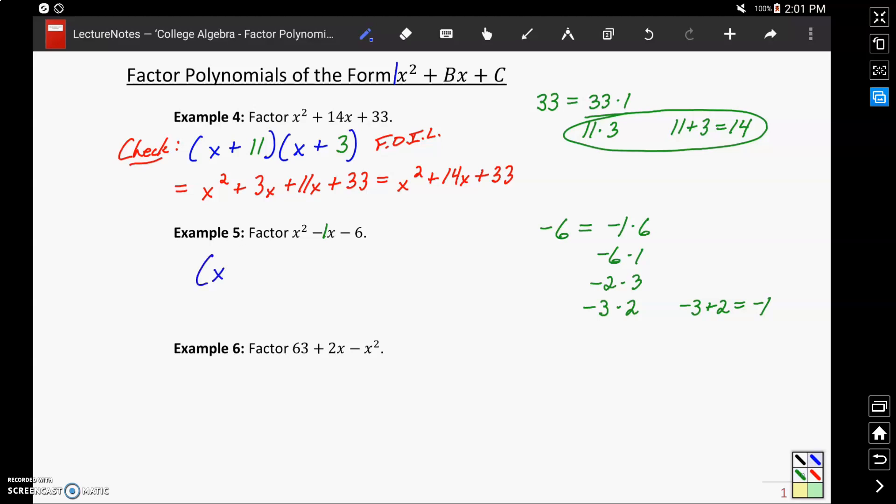So, we'll be able to factor this as x minus 3 times the quantity x plus 2.